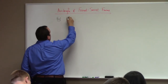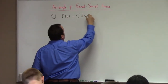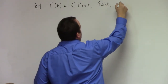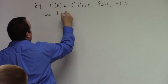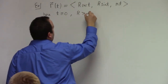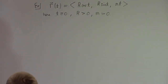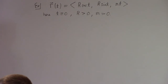Suppose you have a curve parametrized as follows: R of T is equal to R cosine T, R sine T, and M T. Let's suppose T is greater than or equal to zero — that's not absolutely necessary, but just for the sake of visualization — R greater than zero, M greater than zero, although we'll allow R or M to be zero at some point. So first order of business, let's calculate the arc length function for this curve.